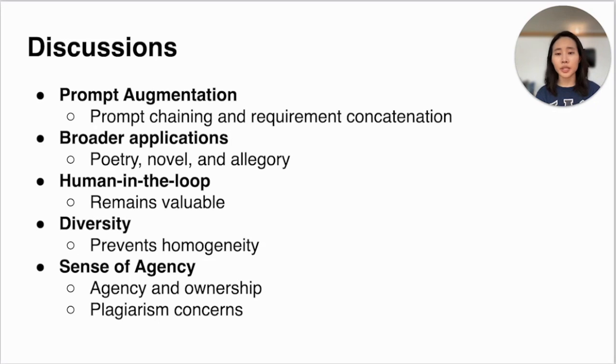Meanwhile, Metaphorian's system prevents homogeneity in machine-generated content and offers diverse options. Users reported a sense of agency and ownership in co-creating with AI with some concerns about plagiarism. Future research can address plagiarism prevention and consider diverse cognitive models of writers.